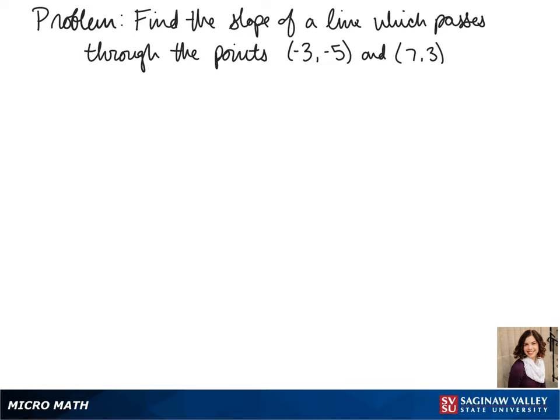Welcome to another day of algebra. Today we'll be finding the slope of a line that passes through the points negative 3, negative 5, and 7, 3.